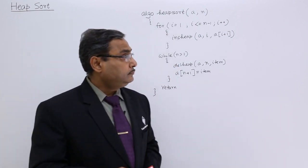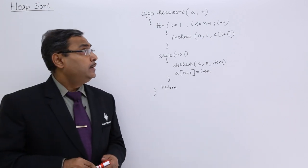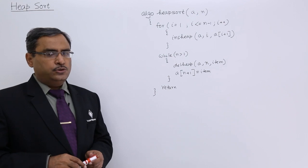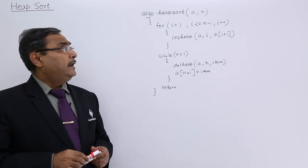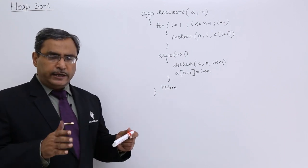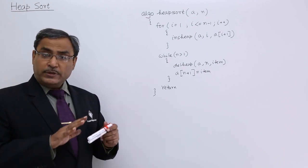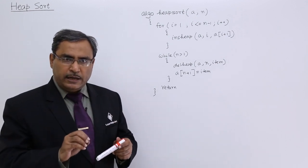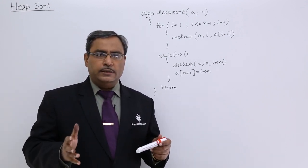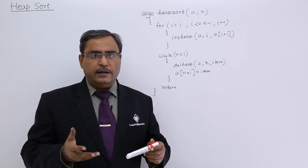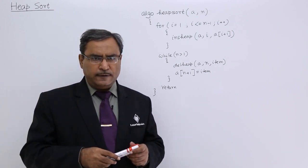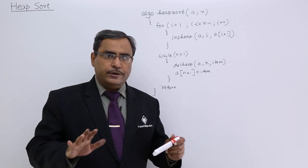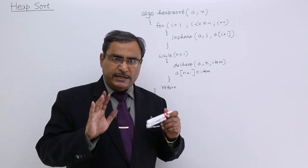Now, this is our heap sort algorithm. A is the name of the array, and this A is containing n number of data. They are not in the heap tree. We have taken input from the keyboard arbitrarily — the user has given input from the keyboard, or we have read this n number of data from some data file or from some other sources. This array has been populated with n number of data in arbitrary order. No heap tree is there initially.